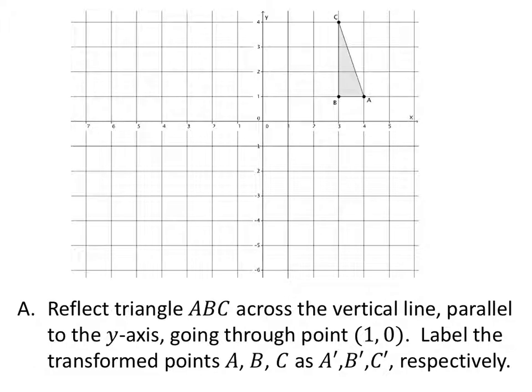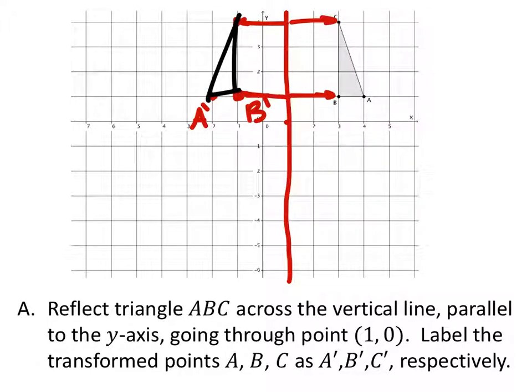We're going to reflect this triangle ABC across the vertical line parallel to the y-axis going through the point 1, 0. 1, 0 is this point and it's parallel to the y-axis so it's going to be this line right here. So B is two away to the right, so we're going to go two away to the left, and this would be B prime. And then A is three to the right, so A prime will be three to the left. And then C up there is two away to the right, so C prime will be two away to the left. And we get this new triangle right here, C prime.